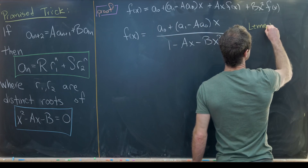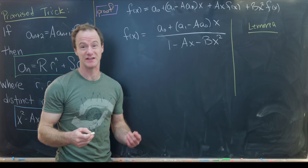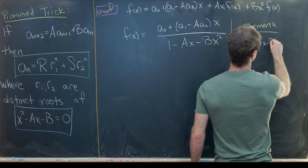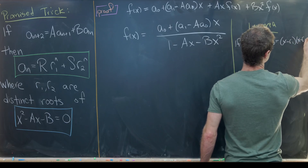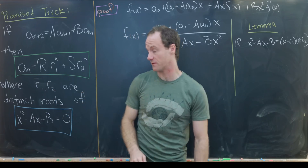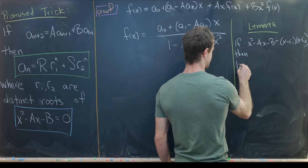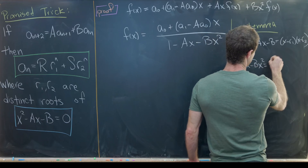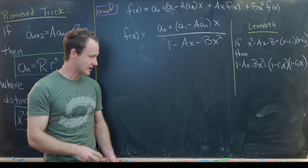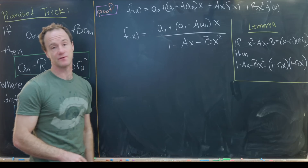The denominator is closely related to the characteristic polynomial, via the following lemma which I'll let you verify — it's easy to check. If x² - Ax - B factors as (x - r₁)(x - r₂), then 1 - Ax - Bx² factors as (1 - r₁x)(1 - r₂x). We will apply this result to our rational function version of the generating function.